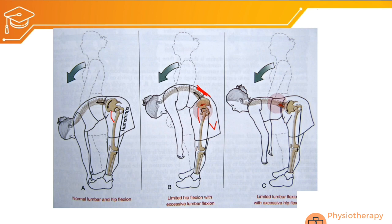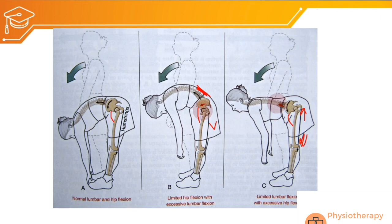Conversely, if the lumbar spine is stiff, the hip joint must increase its range to compensate, placing undue stretch on the hamstrings and increasing injury risk. Regular training and maintaining flexibility through stretching reduces injury risk at the low back and hip. Clinically, strengthening core muscles (rectus abdominis, internal and external obliques), strengthening gluteus maximus, stretching and strengthening lumbar extensors (erector spinae), and stretching hamstrings, iliopsoas, and rectus femoris will maintain normal lumbopelvic rhythm and reduce injury.